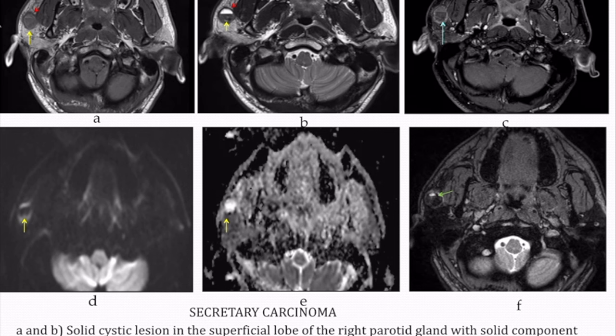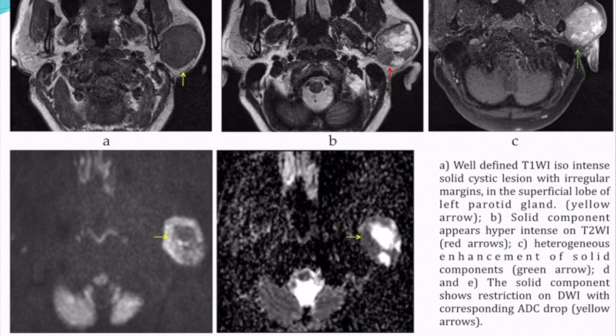A solid-cystic lesion in the superficial lobe of the right parotid gland showed a solid component appearing hypo-intense on T1- and T2-weighted images, with minimal post-contrast enhancement and true diffusion restriction. The imaging diagnosis given was Warthin's tumor; however, on histopathological examination it came out to be secretory carcinoma.